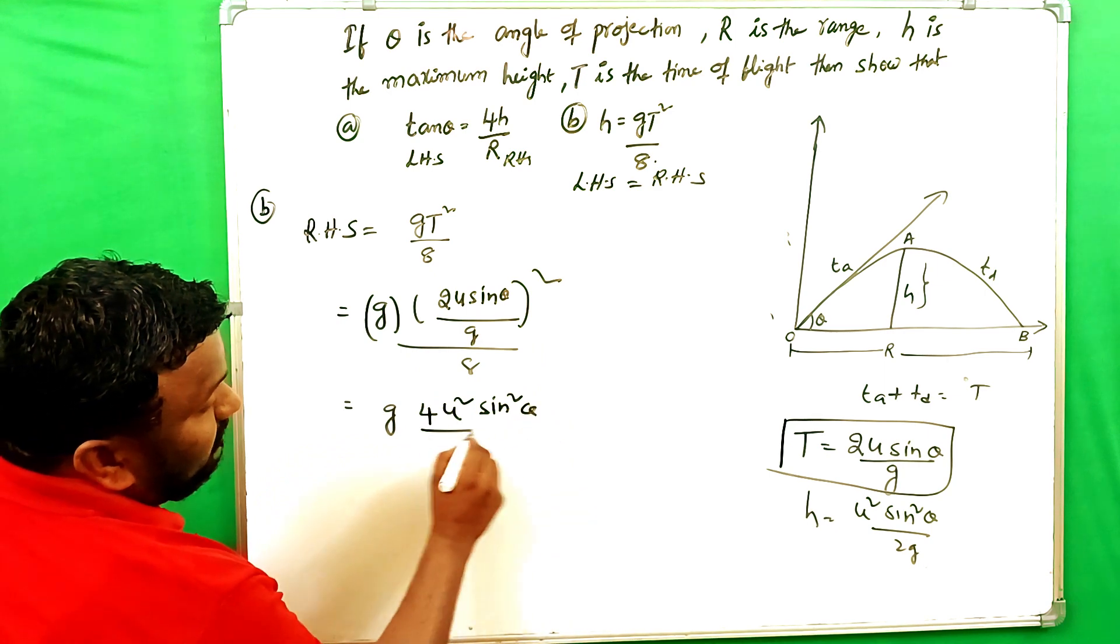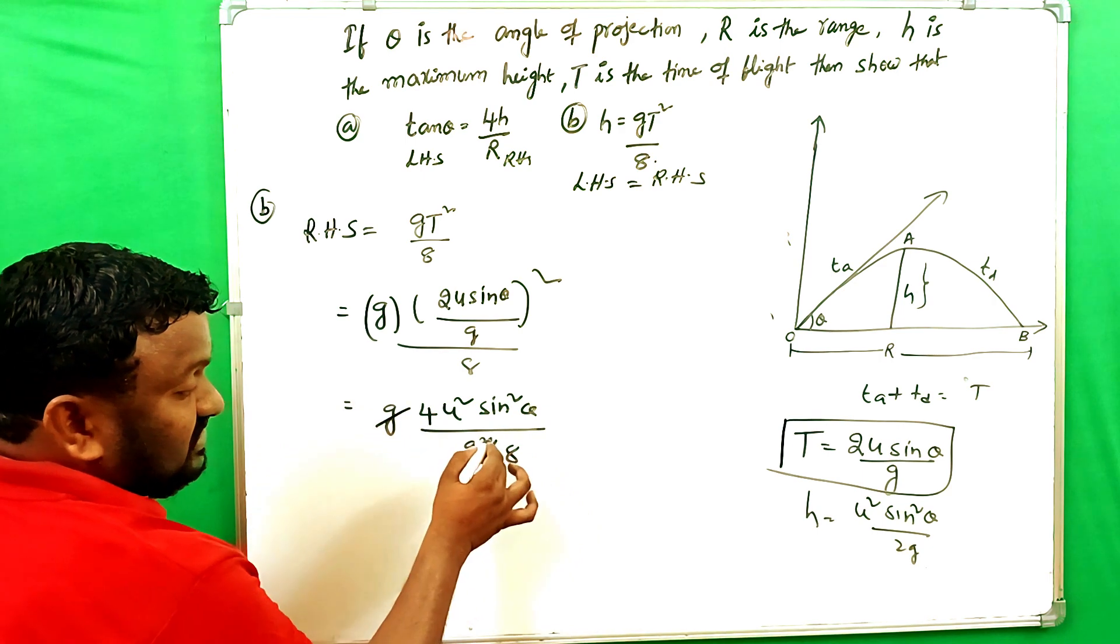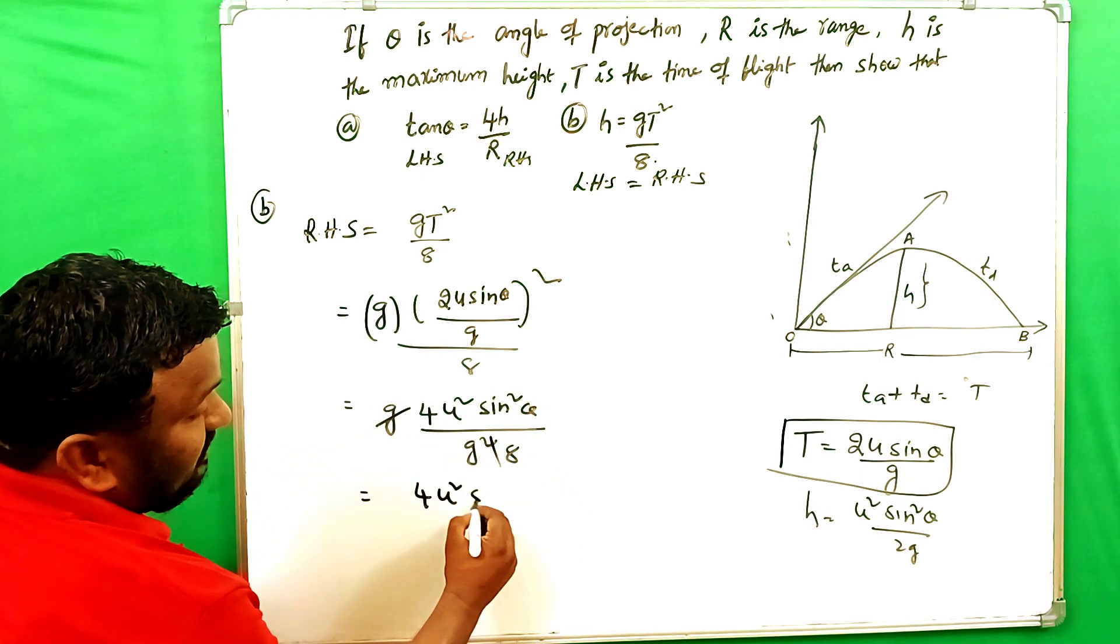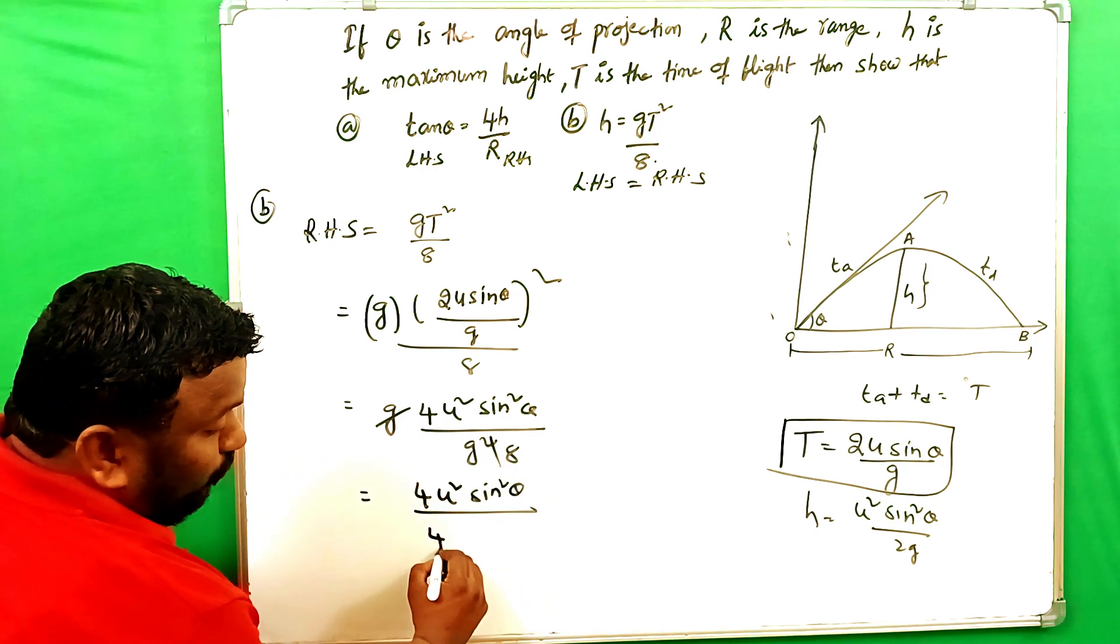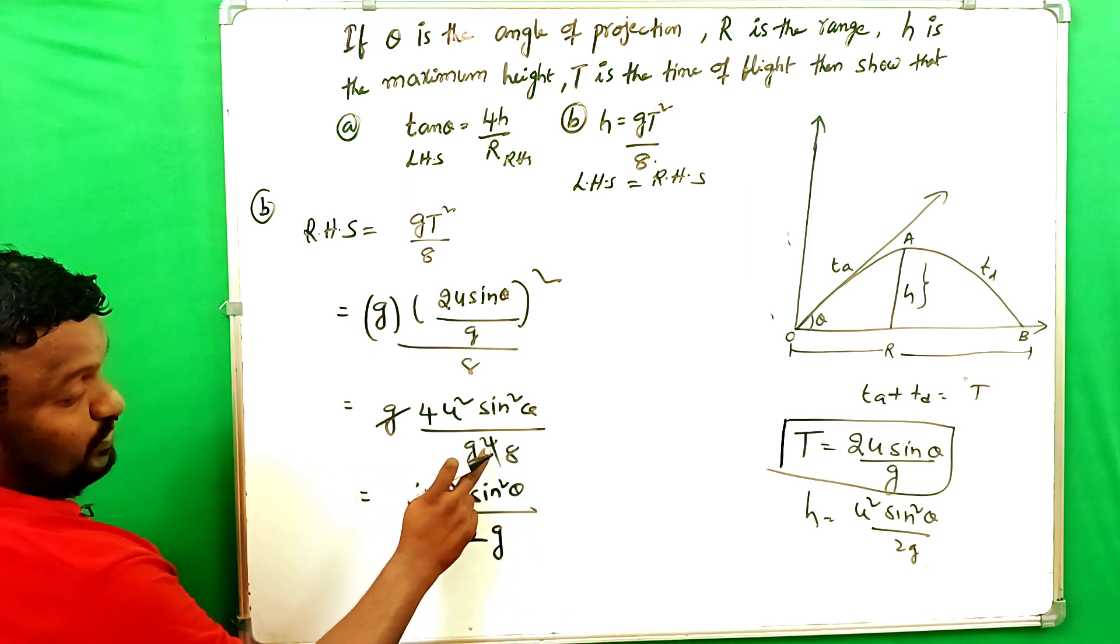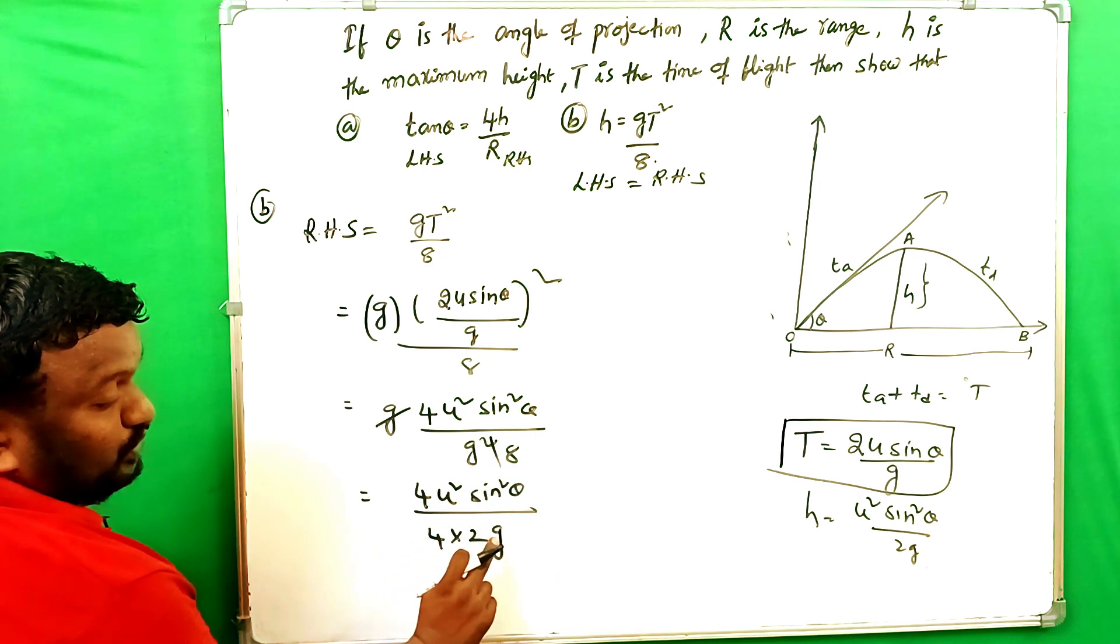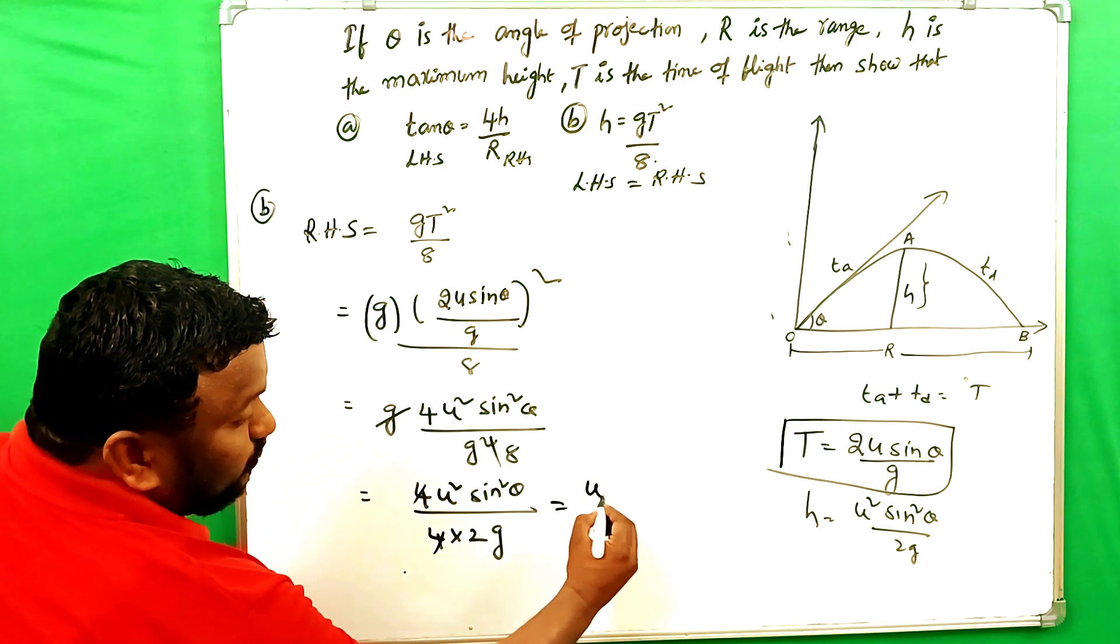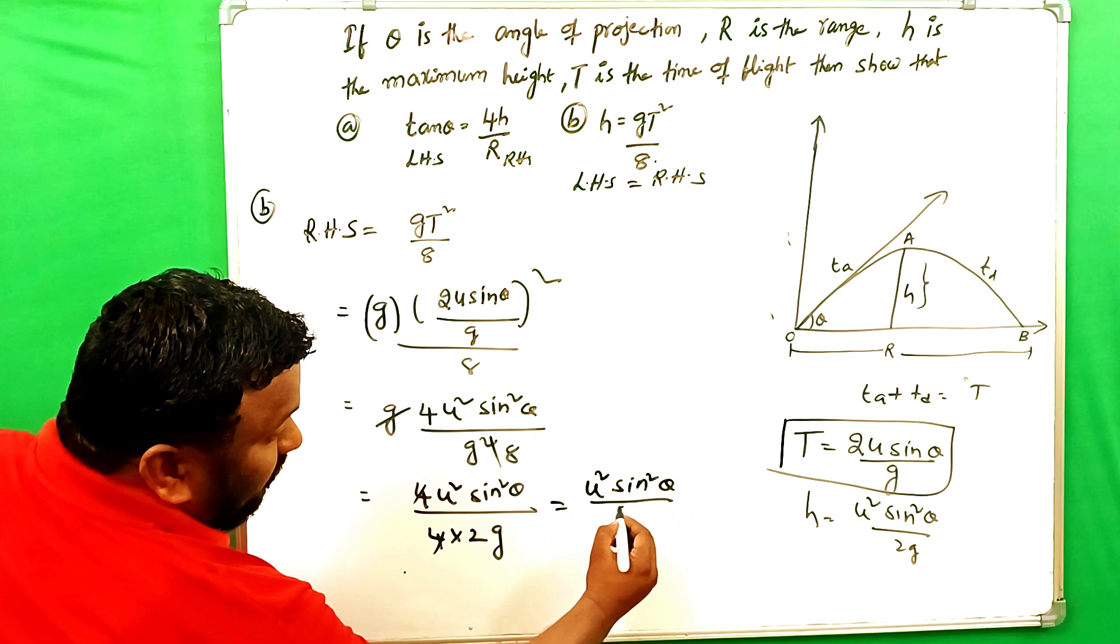That means G of whole square 4U square sine square theta by G square into 8. Here G, G cancel. Here what? 4U square sine square theta by 8 and 4 into 2 into G. G square G cancel. G into 8 and 4 into 2 into 4, 4 cancel. Then what? U square sine square theta by 2 into G.